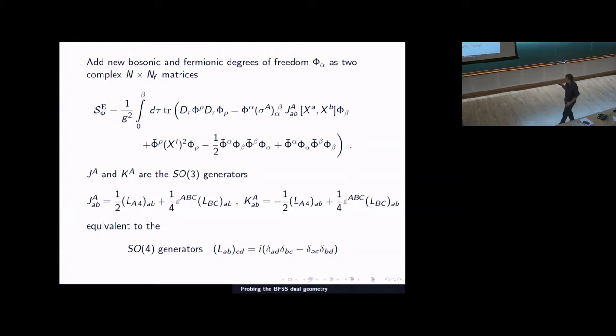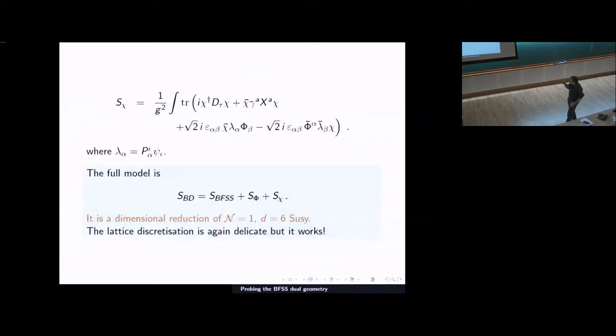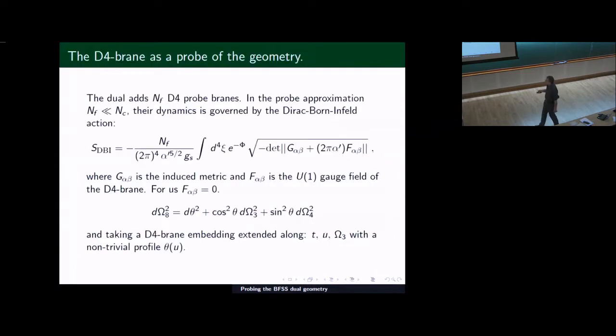The scalars, we're not gauging the sector. It's got a global SU(NF) symmetry and the fermionic sector, which we can again treat in a similar way to what I described with the BFSS. And this is a dimensional reduction. It's a dimensional reduction of N equals one in D equals six Susie. And the lattice discretization works.